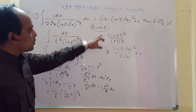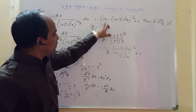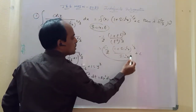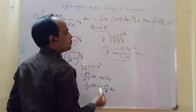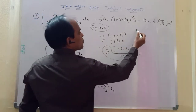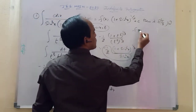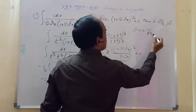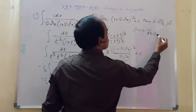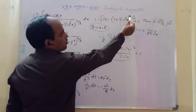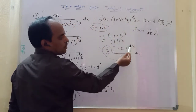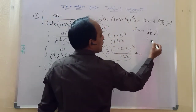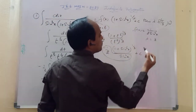Now comparing this result with the given form involving f(x) and λ: f(x) = minus 1/2 sin²x, and 1/λ = 1/3, therefore λ = 3.